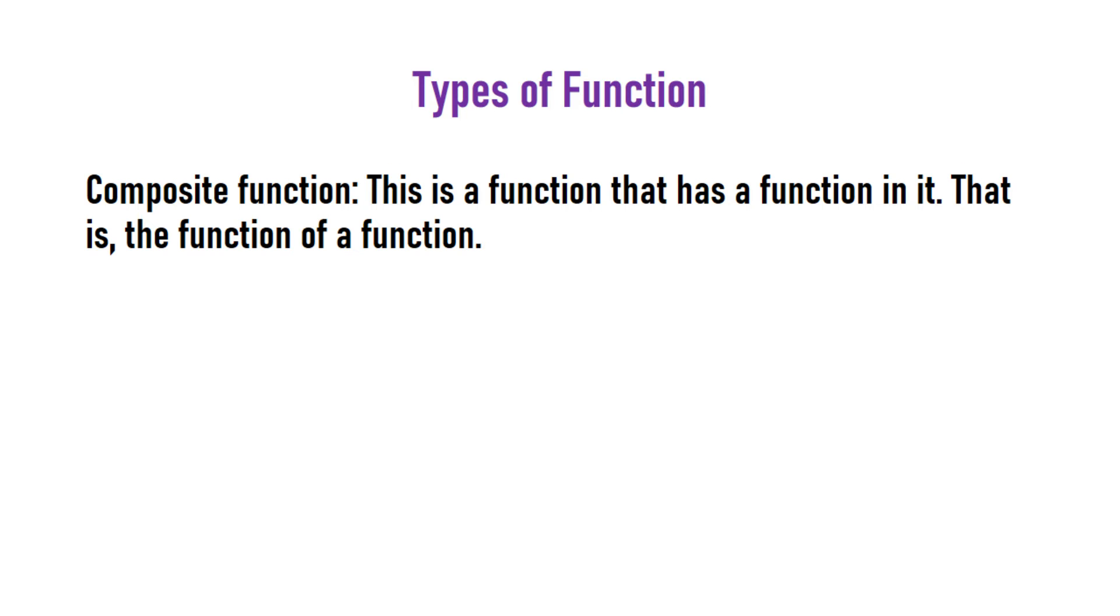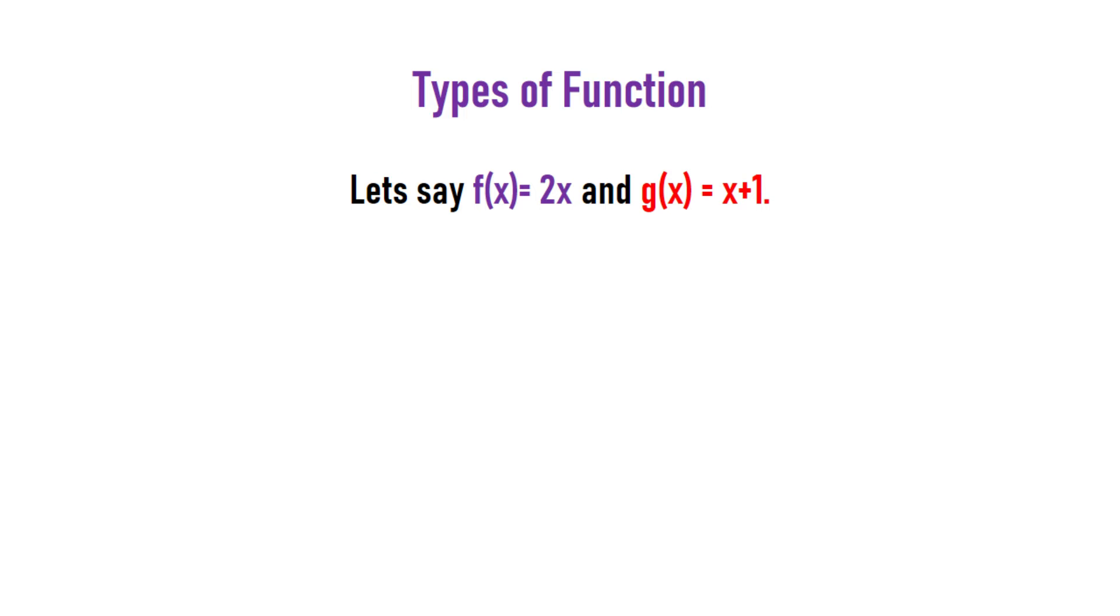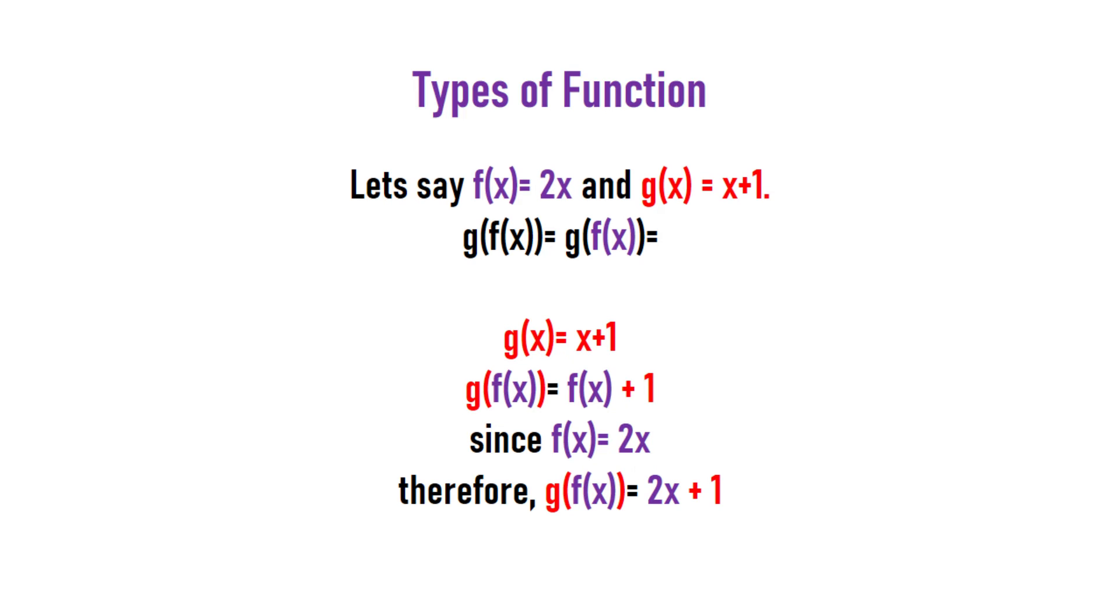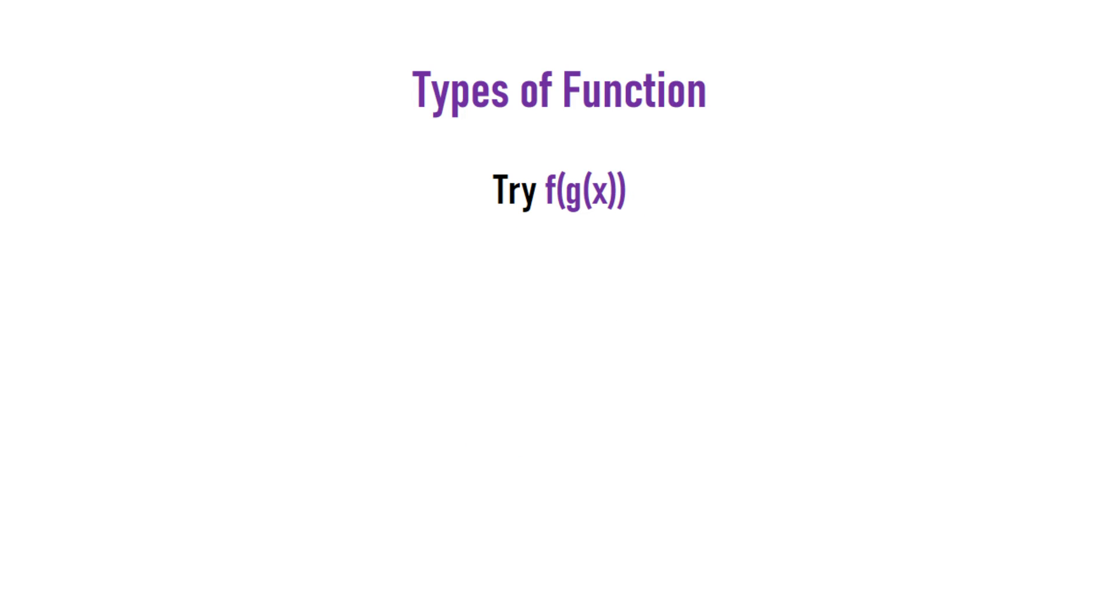Let's take an example. Say f(x) = 2x and g(x) = x+1. What is g(f(x))? g(f(x)) is a composite function - a function inside another function. This means wherever you see x in g(x), replace it with f(x). So g(f(x)) = f(x)+1. Since f(x) = 2x, therefore g(f(x)) = 2x+1. You can try f(g(x)) and comment the right answer.